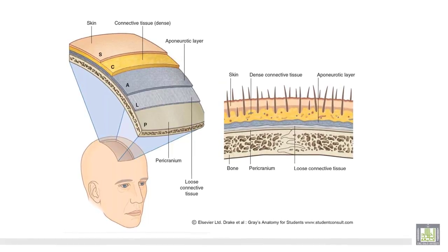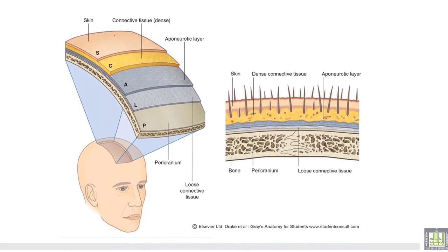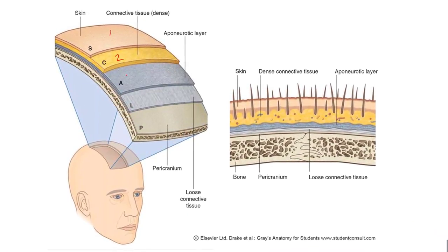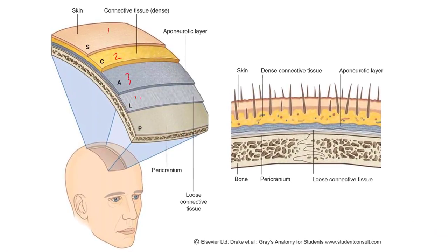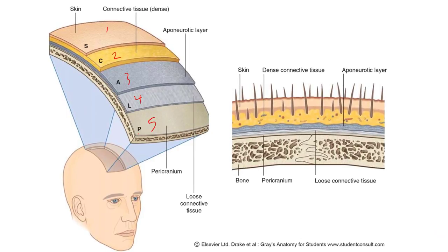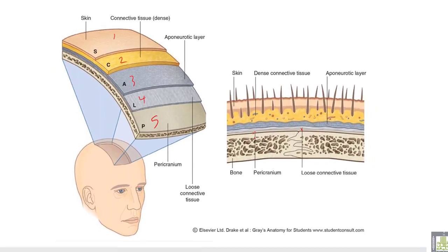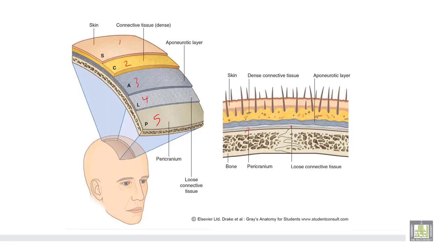The layers of the scalp from above downwards are: number one, skin; number two, connective tissue; number three, aponeurosis; number four, loose irregular tissue; and number five, the pericranium or periosteum.